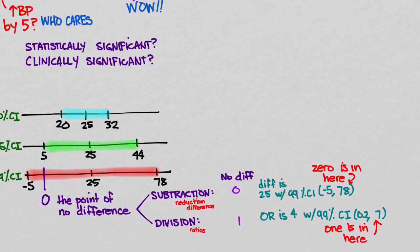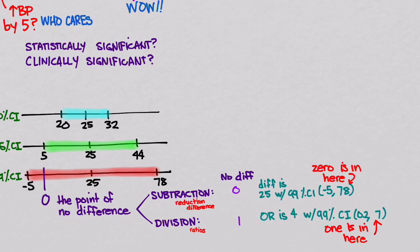When looking at confidence intervals, remember: the point of no difference for subtraction-type problems is 0, and for division-type problems is 1. Subtraction problems use words like 'reduction' or 'difference'; division problems use the word 'ratio.' If the confidence interval includes that point of no difference, then it is not statistically significant. Confidence intervals tell us so much more than point estimates with a p-value — they give an estimate of precision, and can tell you whether something is clinically significant versus only statistically significant. Thanks for watching!